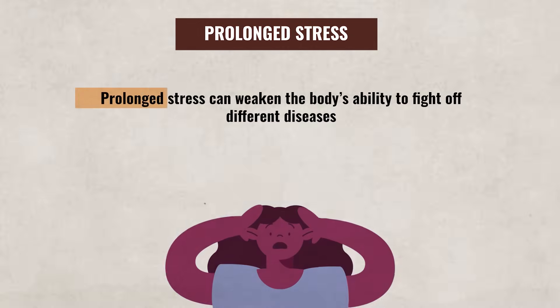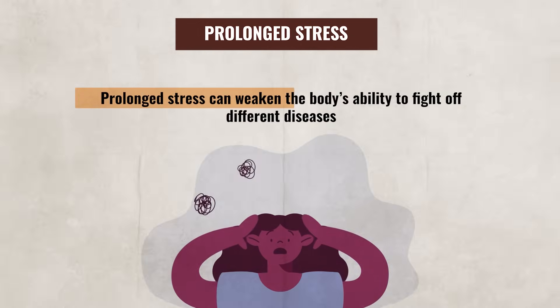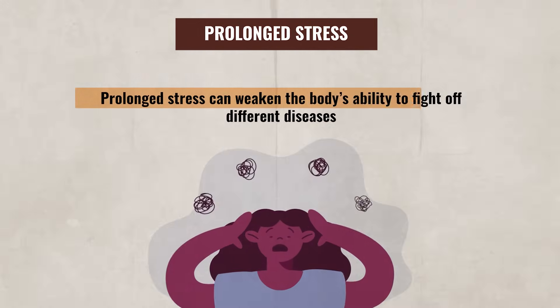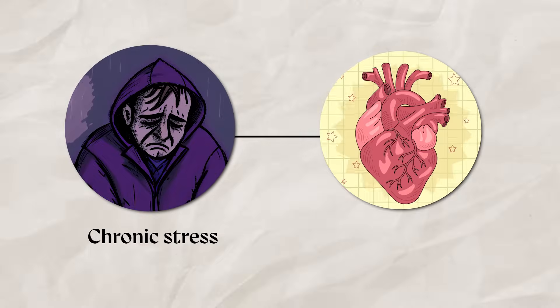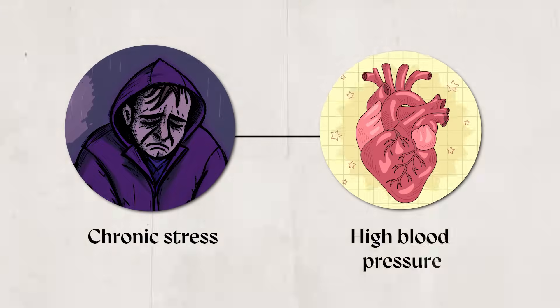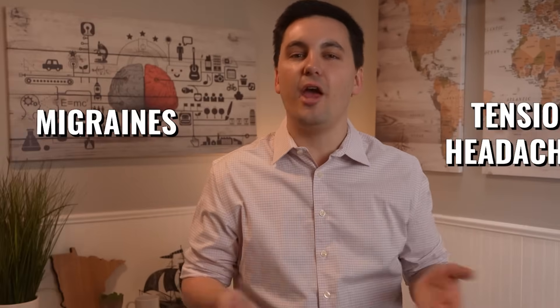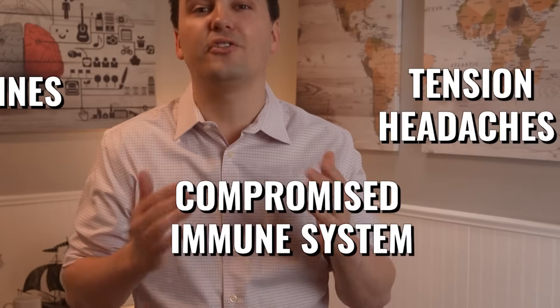We know that prolonged stress can weaken the body's ability to fight off different diseases. Research has shown that chronic stress can lead to hypertension, which is high blood pressure. It can also lead to tension headaches, migraines, and a compromised immune system. So health psychologists pay close attention to how an individual handles stress and how often they are stressed.